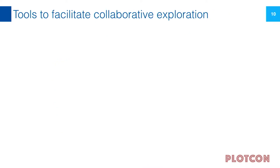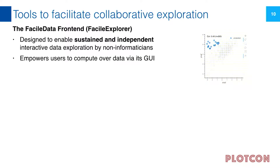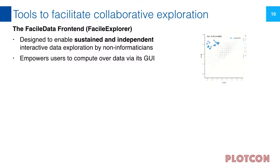This is exactly what the FASIL data ecosystem wants to enable. Right now there are two parts: a front end called the FASIL Explorer, designed to enable sustained and independent interactive data exploration by non-informaticians. It empowers users to compute over data via a GUI. Biologists have a reductionist way of approaching problems, and if you reduce all computation down to one thing, it's a for loop. By enabling people to iterate over different aspects of their data, you are getting them closer to enabling computation over their data.